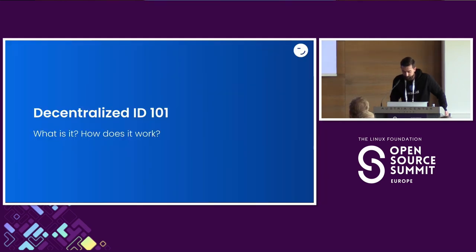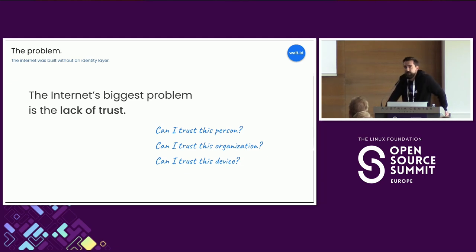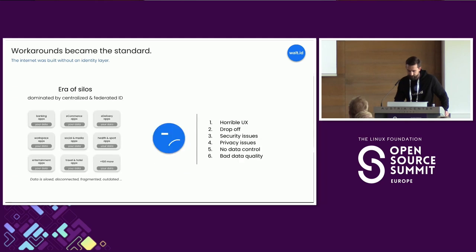But first things first — what is decentralized identity and how does it work? It's always useful to start with the problem. One of the internet's biggest problems is the lack of trust. If you're interacting with someone online, you have no idea who this organization, person, or device actually is, or who it belongs to. There's no built-in identity layer into the web.